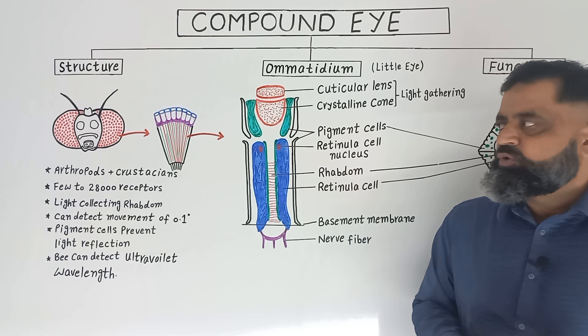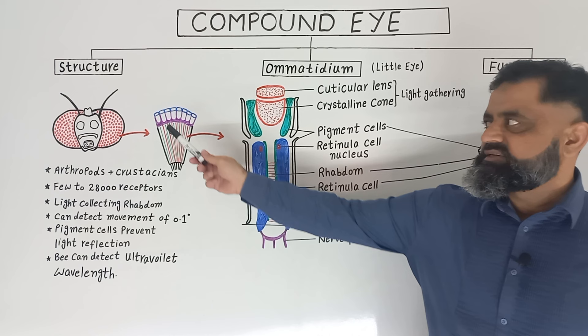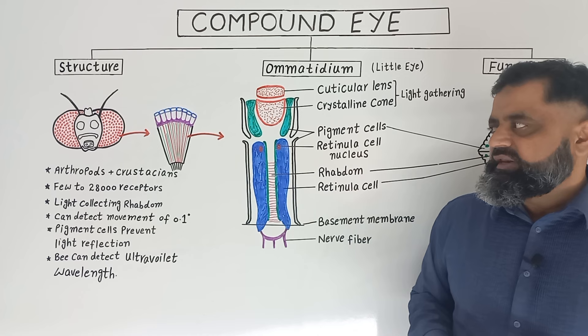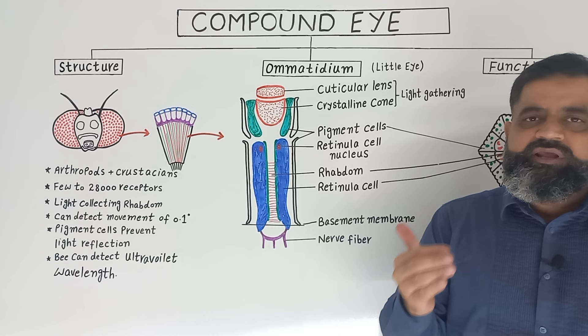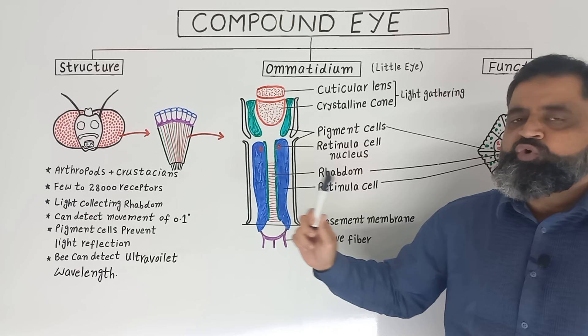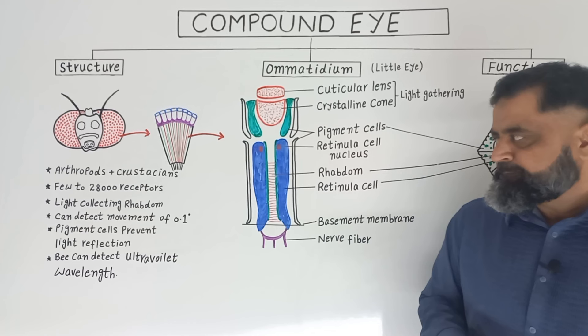To summarize compound eyes: they are present in Arthropoda, crustaceans, and some mollusks. There are few to 28,000 receptors present in a compound eye of an insect. The light-collecting area is known as the rhabdom, which is present between retinula cells. Due to the slightly different angle of each ommatidium from its neighboring ommatidia, insects can detect movement of 0.1 degrees. Pigment cells prevent light reflection to other ommatidia.